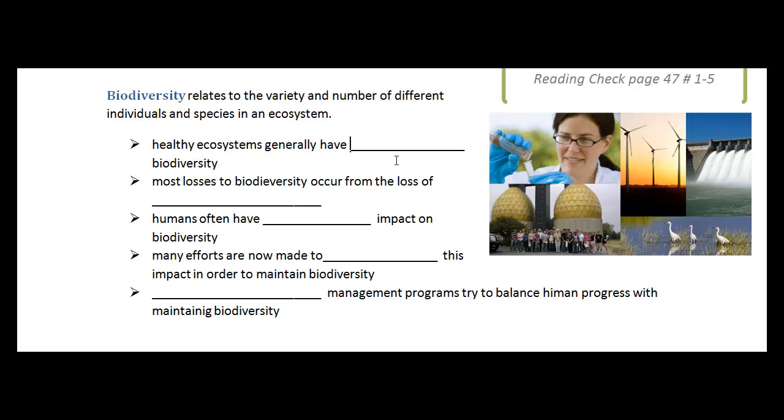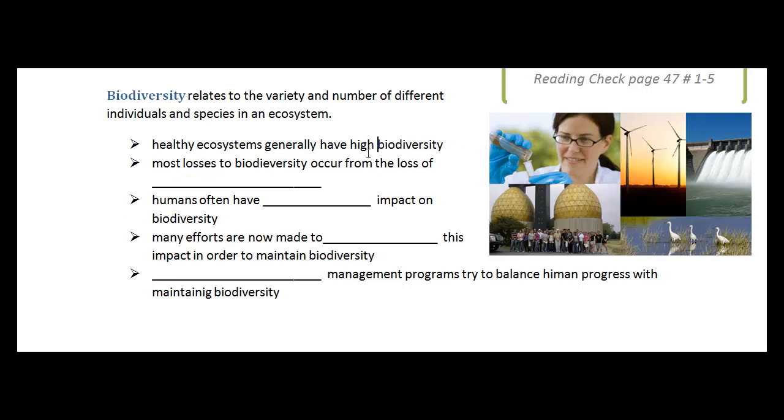The last bit today I want to talk about is biodiversity. And so bio again meaning life. Diversity is diverse. Differences. So biodiversity relates to the variety and number of different individuals and species in an ecosystem. So an ecosystem generally has a high biodiversity if it's healthy. Most losses to biodiversity comes from loss of habitat. And so we hear about that quite often as the habitat decreases the biodiversity decreases and the ecosystem suffers.